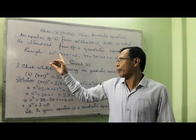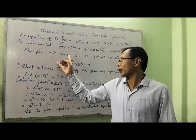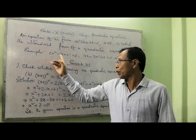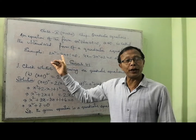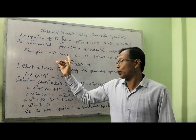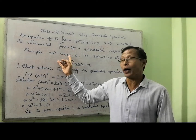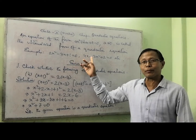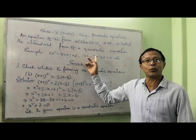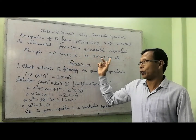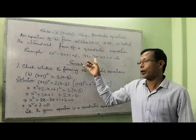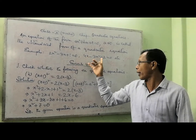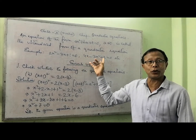Example: 2x squared minus 3x plus 1 equal to 0. Here a is 2, b is minus 3, and c equal to 1. Here I will give you another example: 4x minus 3x squared plus 2 equal to 0. Here your a is minus 3, your b is 4, and your c is 2.